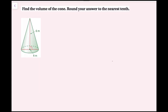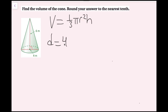For this example, we're going to find the volume of the cone and round the answer to the nearest tenth. I'm given the height of the cone and the diameter of the cone, but I need the radius for my formula: V equals one-third pi r squared h. My diameter is 4, so my radius is half of that — 2 meters. And my height is 6 meters.